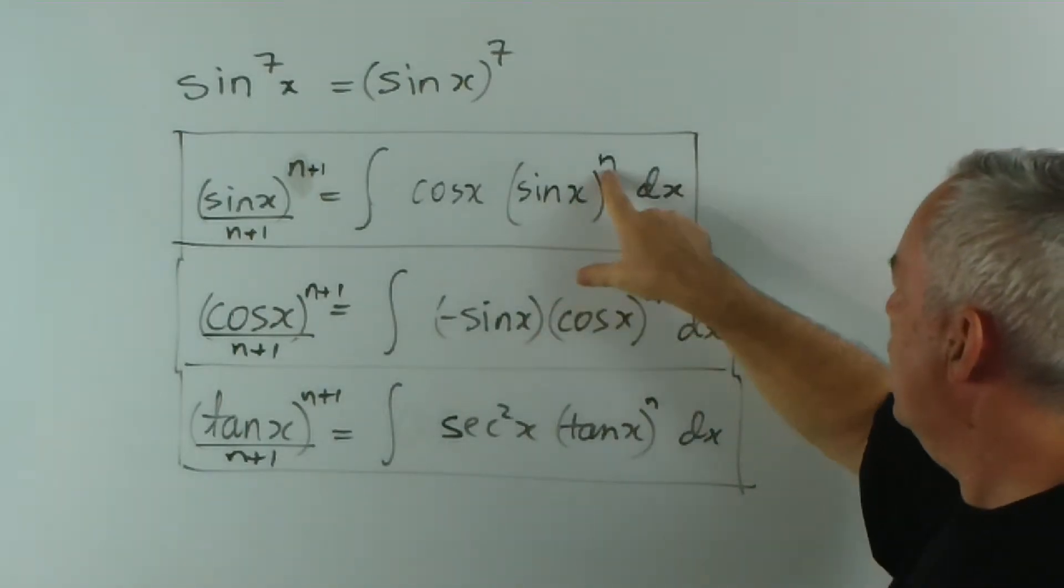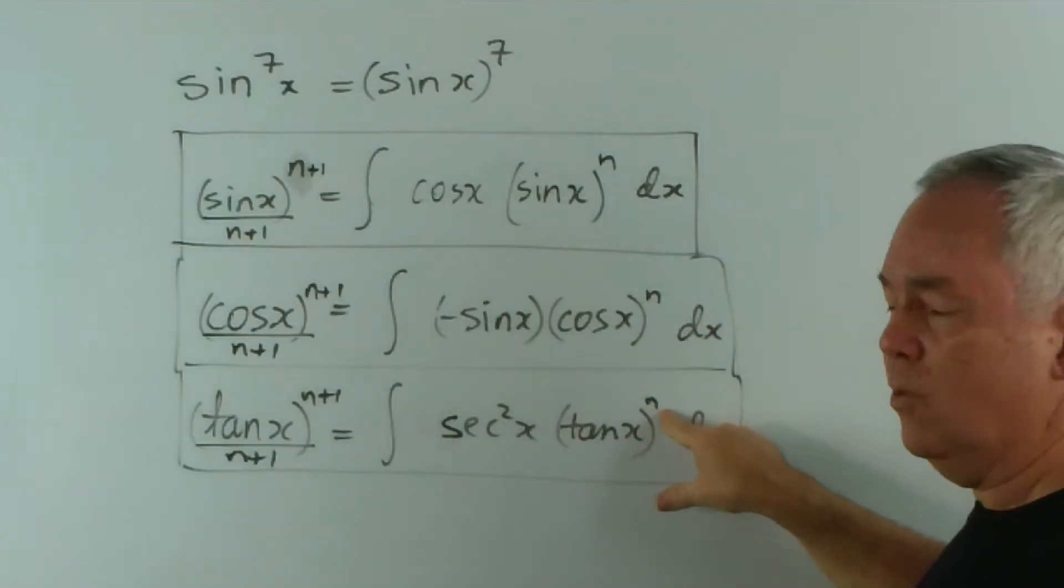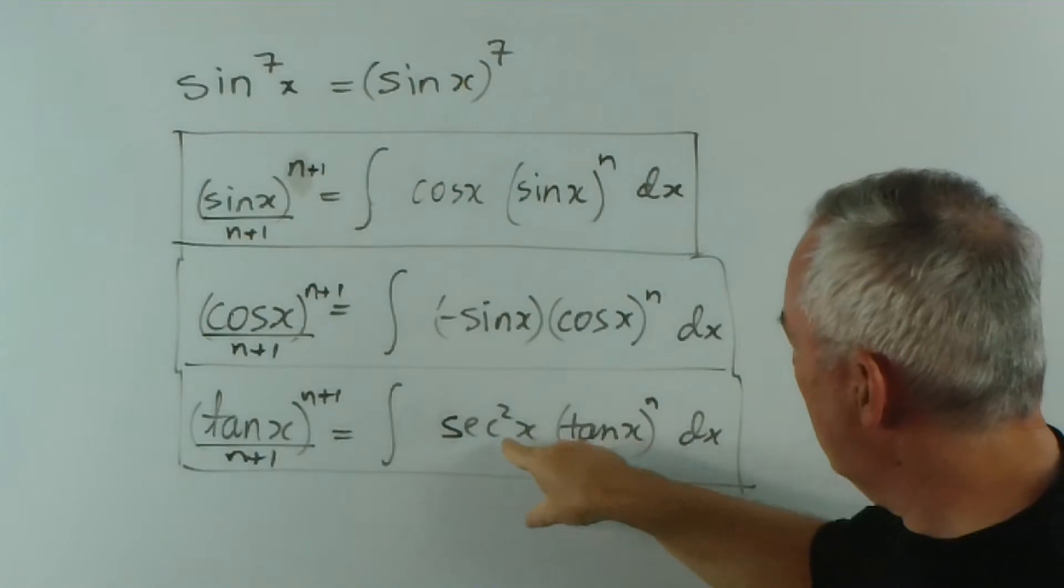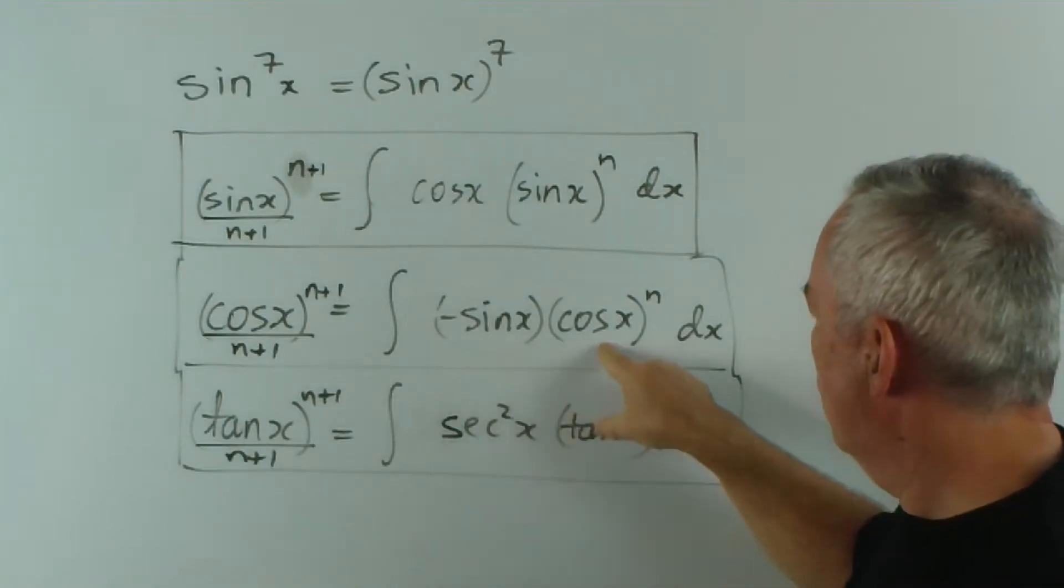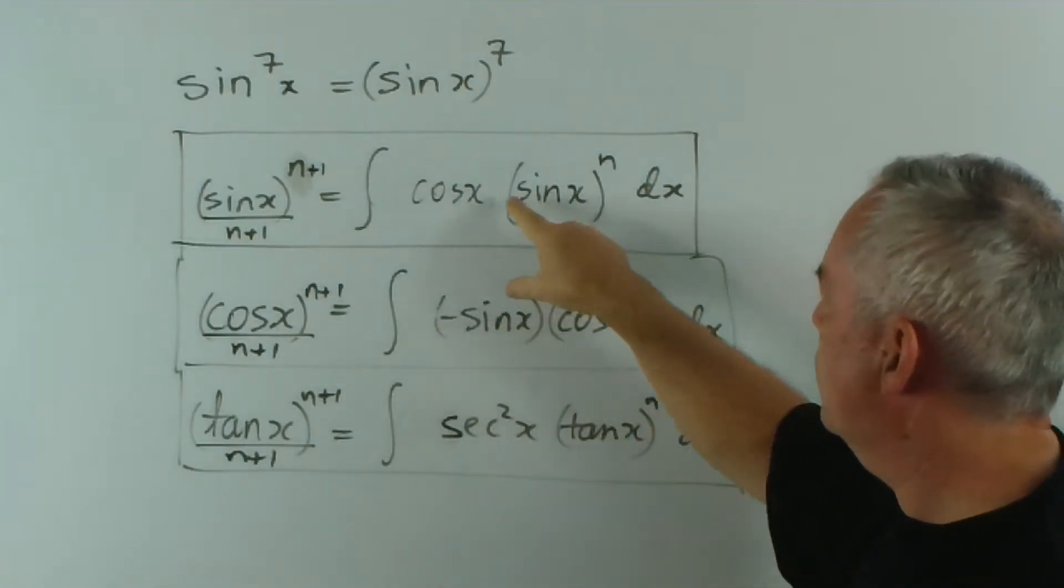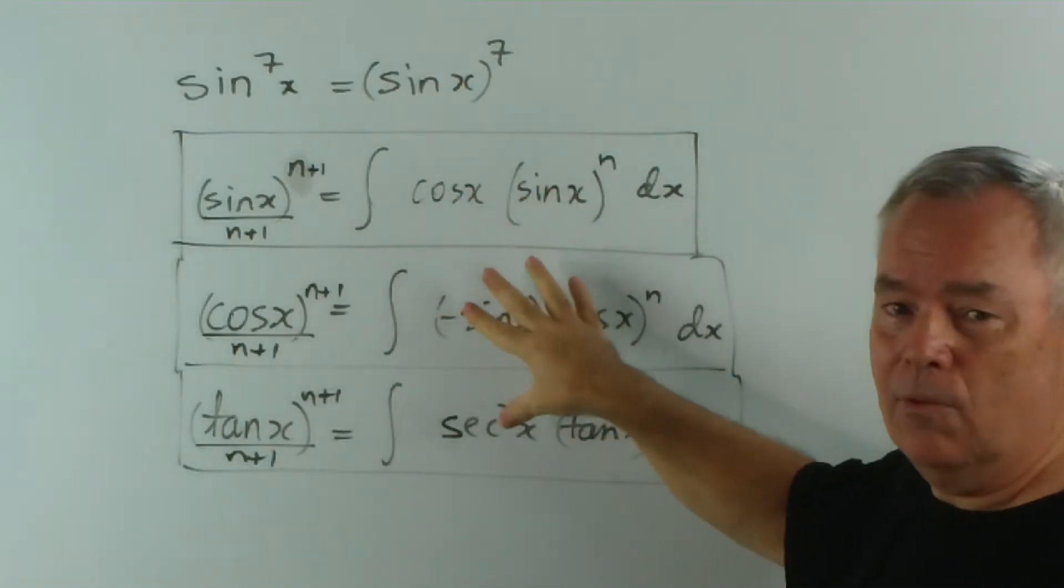But these are the three patterns. Whether we have sine x to a power, cos x to a power, or tan x to a power, the key pattern we're looking for is we want the derivative of tan x at the front, the derivative of cos x at the front, or the derivative of sine x at the front. This is the pattern we're looking for.